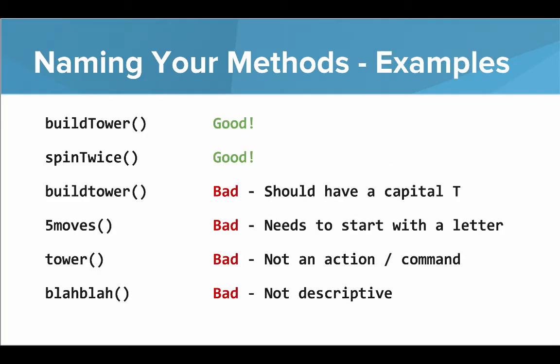So let's look at some good and bad names for methods. Build tower, that looks good. Spin twice, that looks good. Build tower with a lowercase t, well that one should have a capital T in the second word for tower.